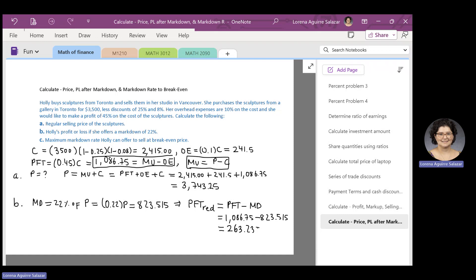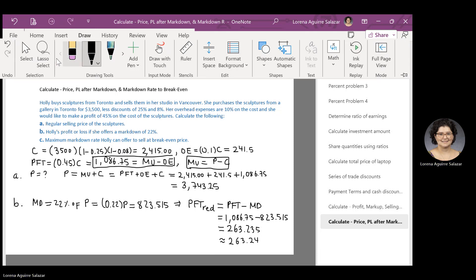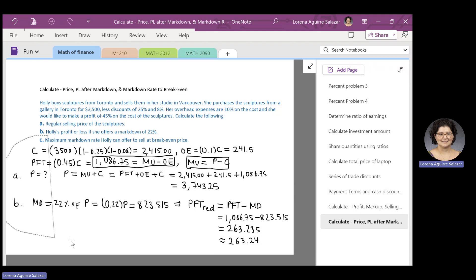Because we got a positive number, we can say that Hoed made a profit when she offered a markdown of 22 percent, and that profit was $263.235 or about $263.24. So, now that we have all this information, let's move on to part C of this problem.